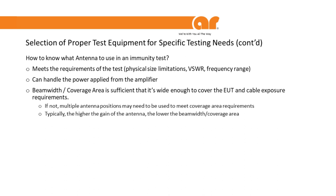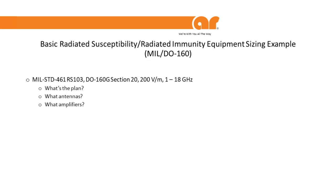For IEC 61000-4-3, which requires a uniform field area, the uniform field area is 1.5 meters by 1.5 meters. Your antenna beam width needs to be wide enough to get a uniform field across the entire test setup uniform field area. Different test standards require different types of coverage areas.